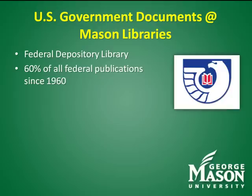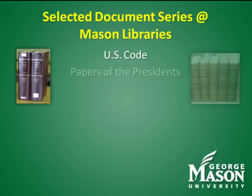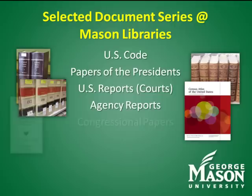The U.S. government documents collection contains recent and historical documents from the executive, legislative, and judicial branches of government. Publications include the United States Code, presidential papers, Supreme Court opinions, agency research and regulatory reports, congressional reports and hearings, data resources, topographic maps, and other resources.